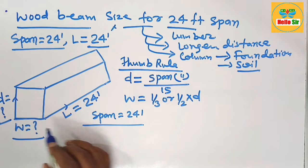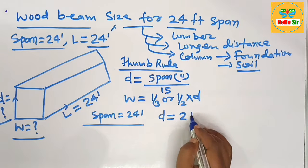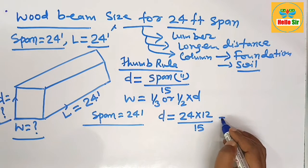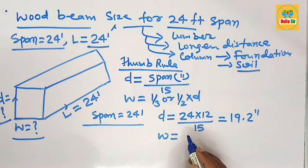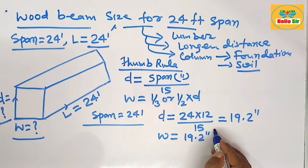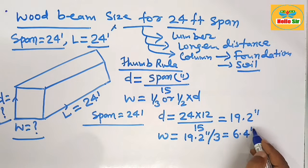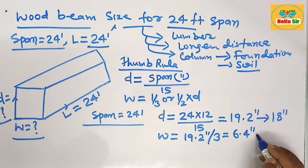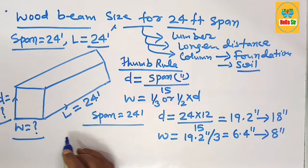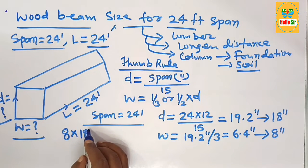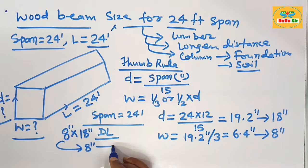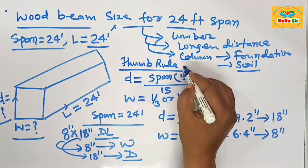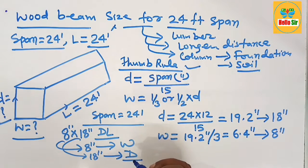The depth of the wood beam is calculated as: 24 × 12 ÷ 15 = 19.2 inches. The width section is: 19.2 ÷ 3 = 6.4 inches. These are rounded to standard lumber dimensions — 18 inches depth and 8 inches width. Therefore, you need an 8-inch by 18-inch three-dimensional lumber as the wood beam required to span 24 feet. This calculation is based on the thumb rule for sizing wood beams.